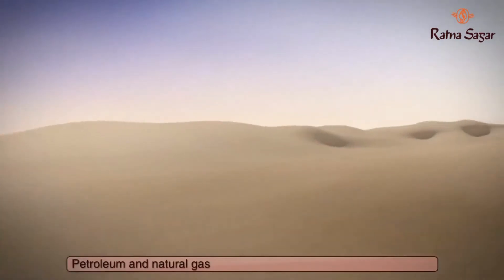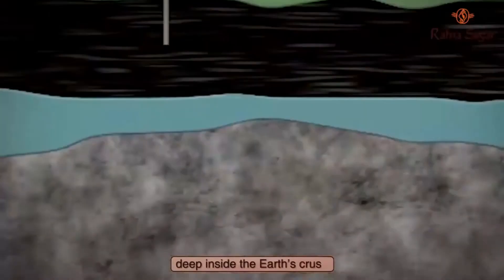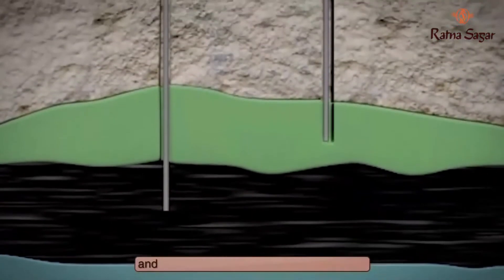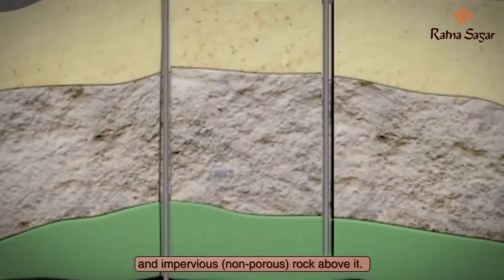Petroleum and natural gas are often found together as large deposits deep inside the earth's crust. Petroleum is obtained by drilling through the earth and impervious, non-porous rock above it.